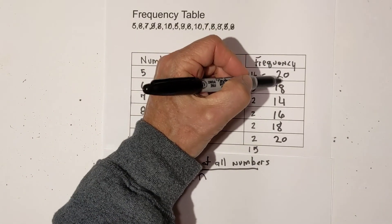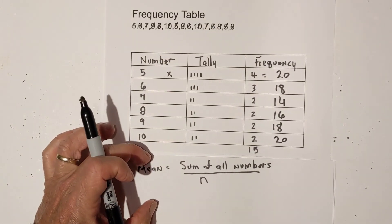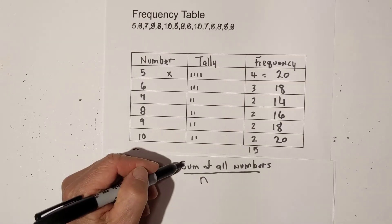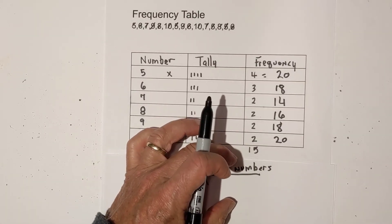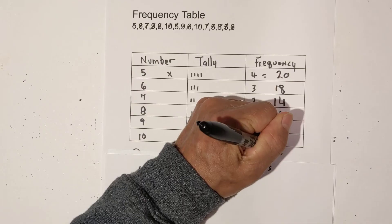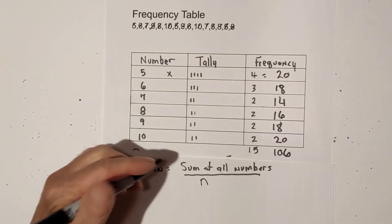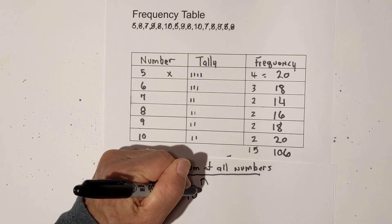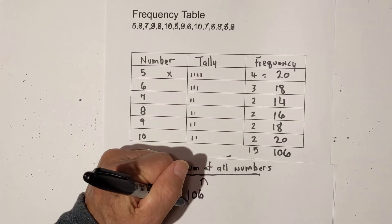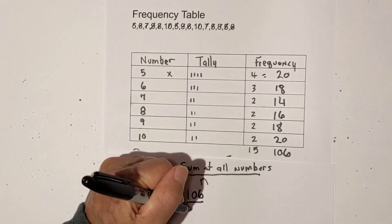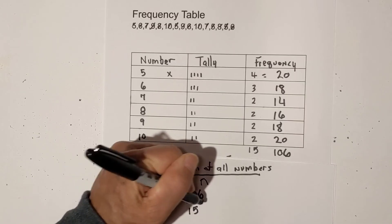And so now, if I total this up, it will give me the sum of all of the numbers. And when I do that, it is 106. So now, if I plug this into the formula, I have 106, which is the sum of all numbers, divided by the total numbers, I have 15 numbers total.